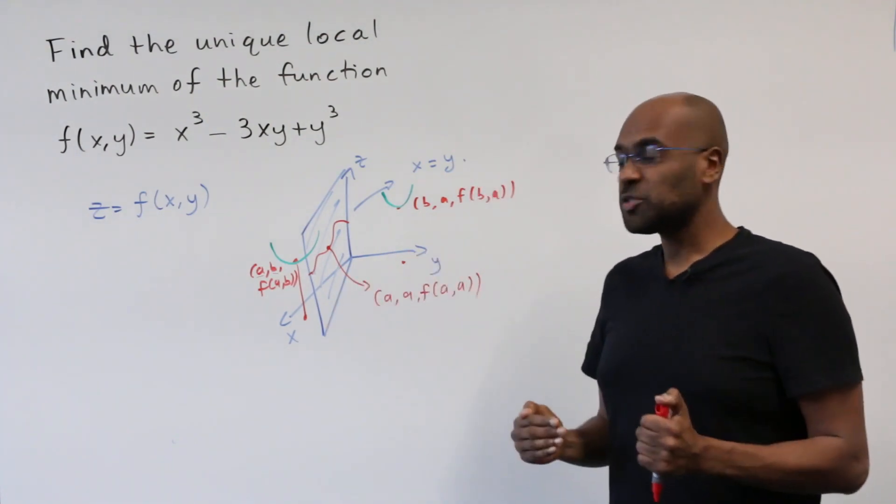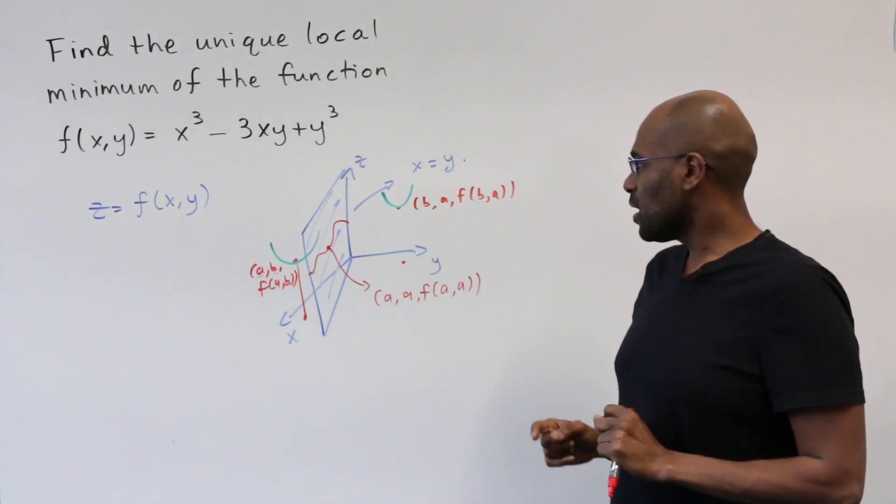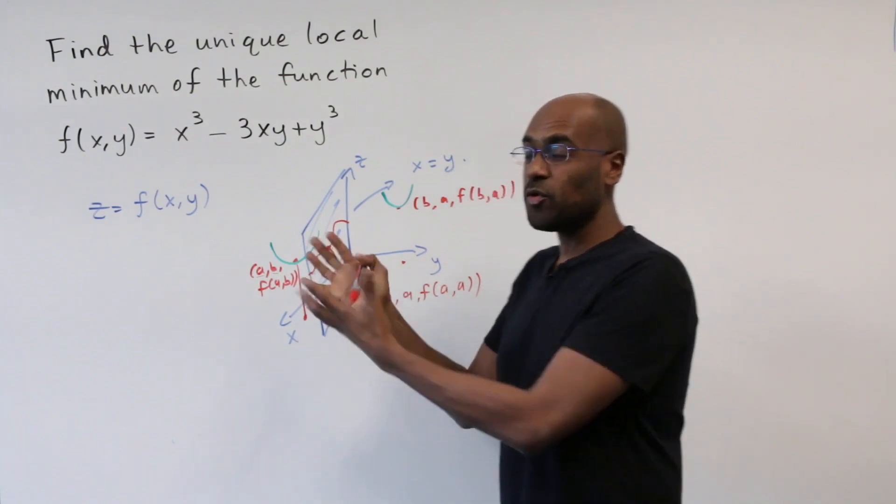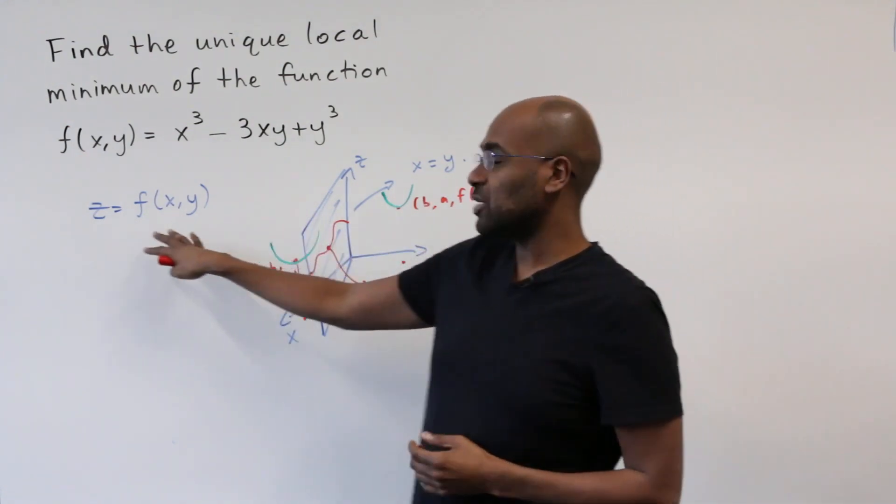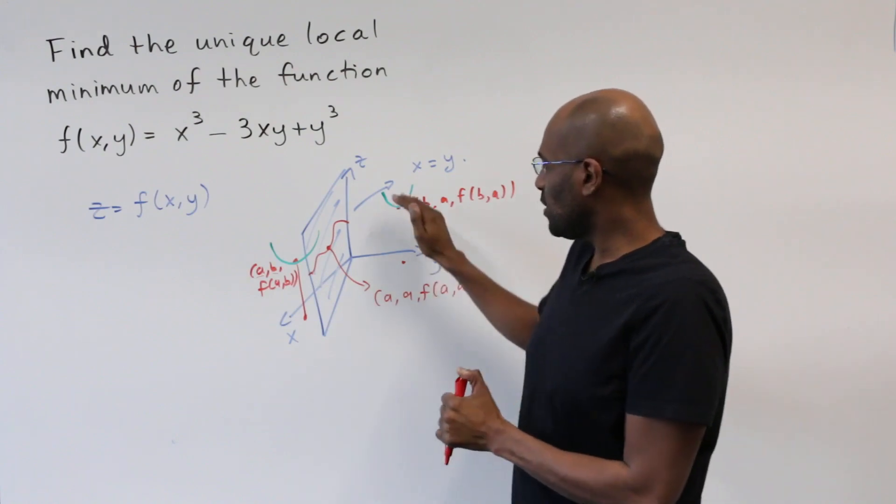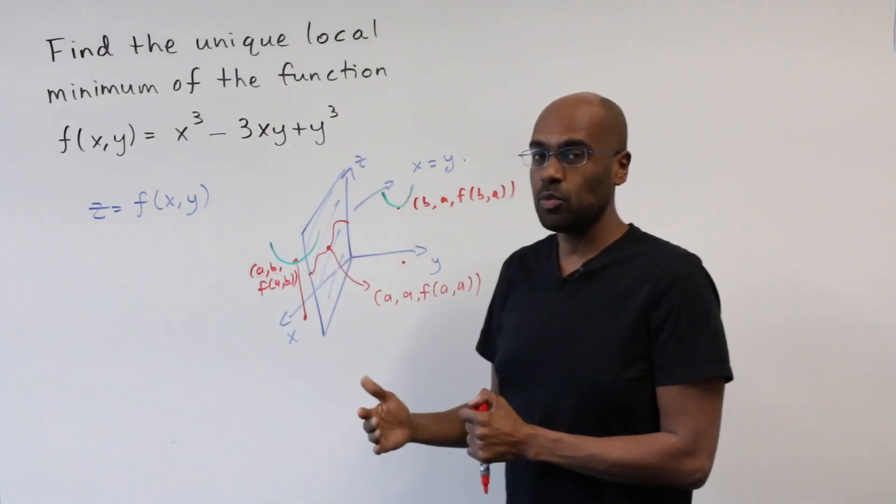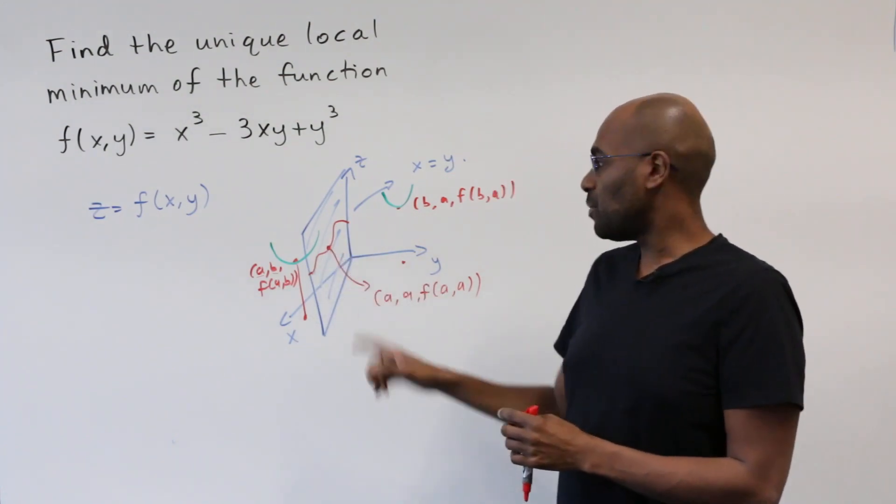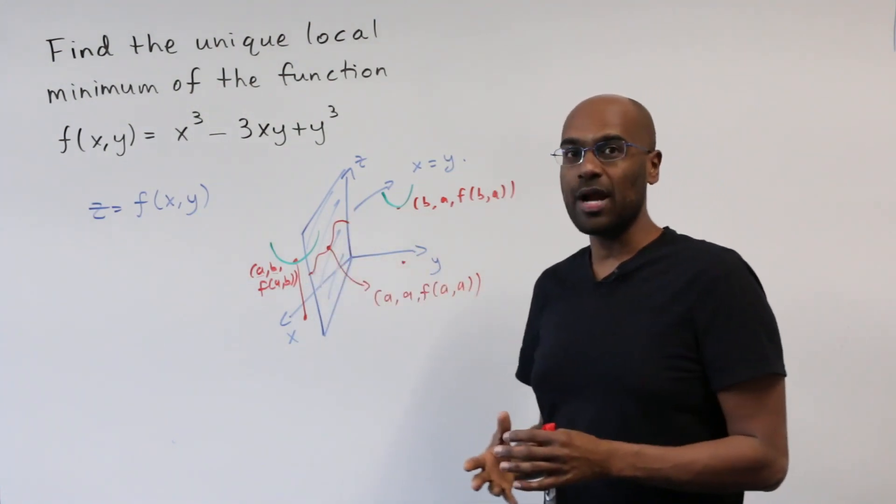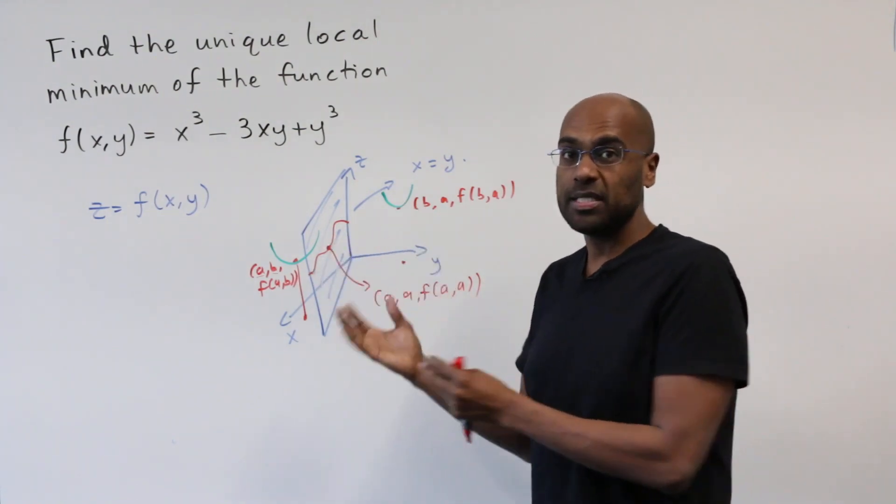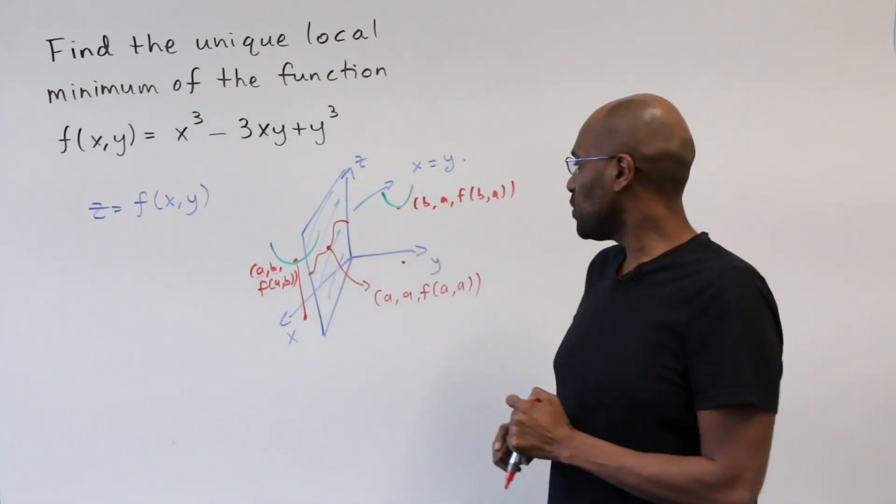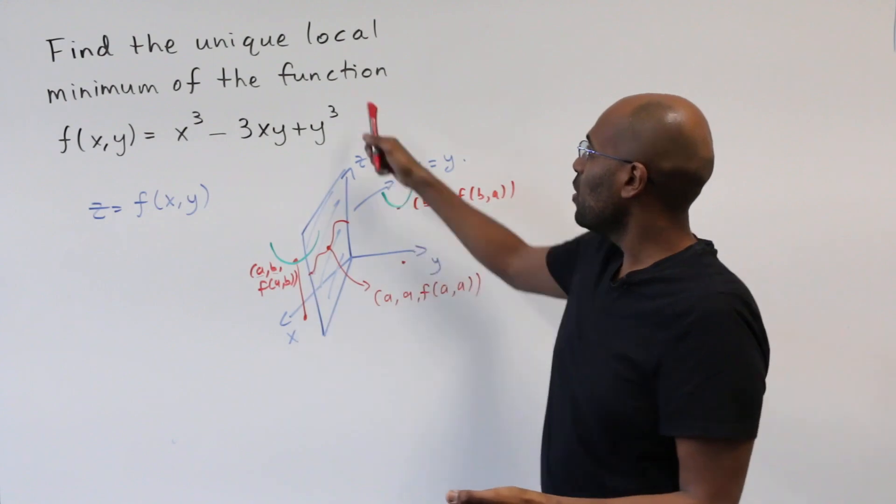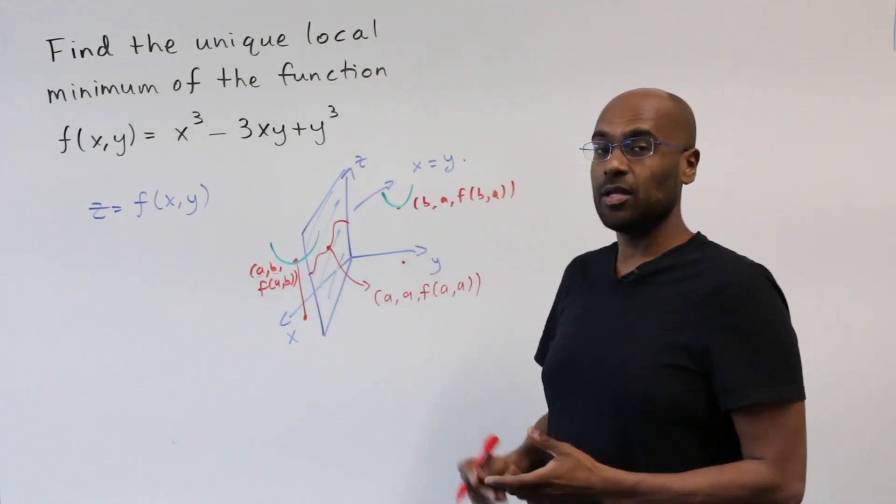So we can now reduce this problem to a one variable calculus problem by thinking about it in the following way. If we had a local minimum for this entire graph, z equals f x y, then in the piece of the graph that intersects with the plane x equals y, that point that we're considering will have to be a local minimum of that smaller graph as well, because that graph is a piece of the larger graph. So we can restrict to this one dimensional curve and look for local minima there to figure out local minima of this larger function.